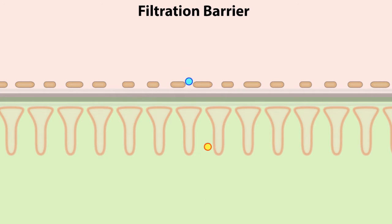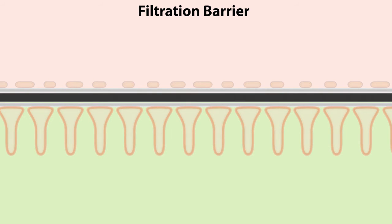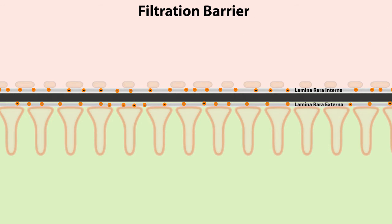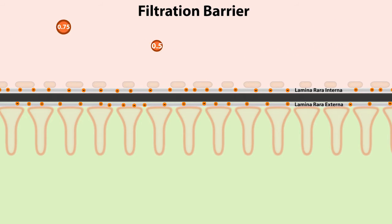and water to freely pass through pores or fenestrations that measure 70 to 100 nanometers in diameter. The glomerular basement membrane contains proteoglycans conjugated to negatively charged heparin sulfate, located in the lamina rara interna and externa, which restrict the passage of large negatively charged molecules like albumin, while restricting molecules larger than one kilodalton.